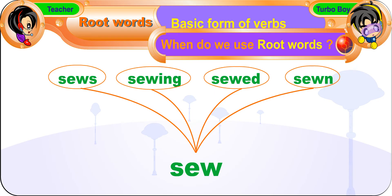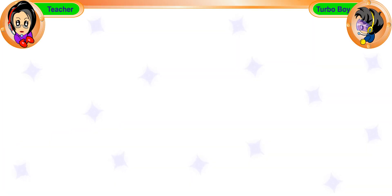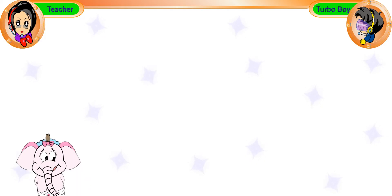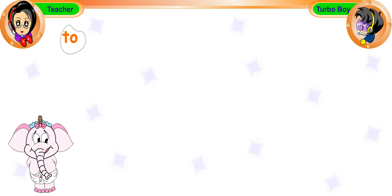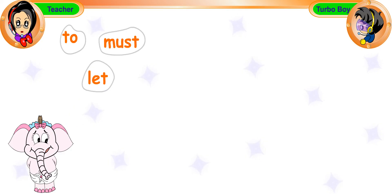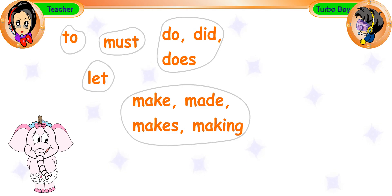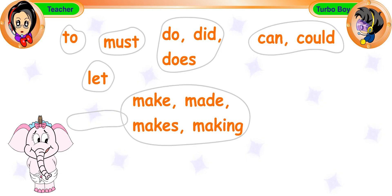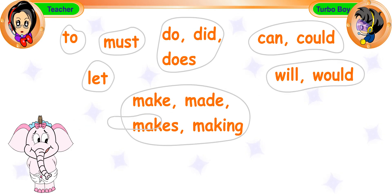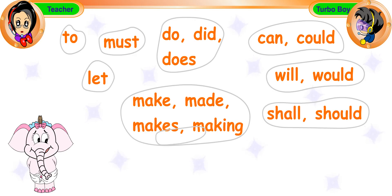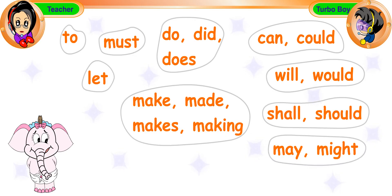When do we use root words? We use root words immediately after these 18 words. They are: to, let, must, do, did, does, make, made, makes, making, and modals such as can, could, will, would, shall, should, may, and might. These 18 words are very powerful and they make sure that the verbs behind them are root words.